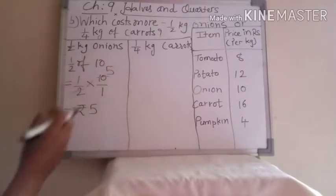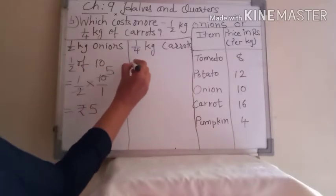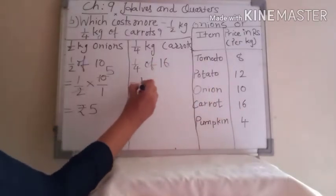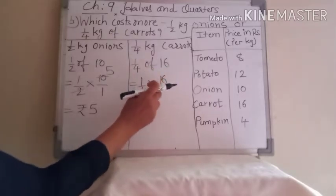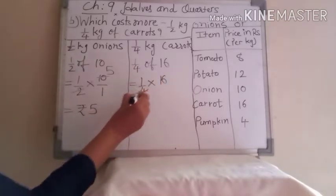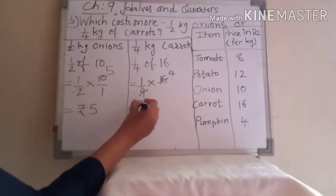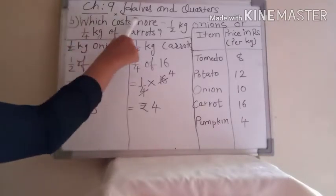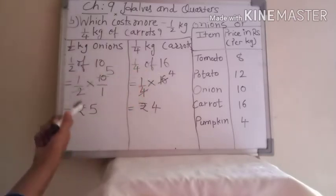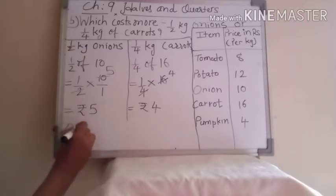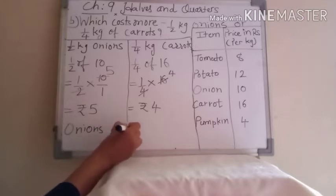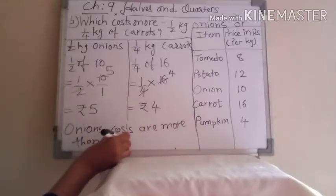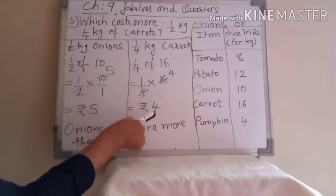Now we solve with the method. Write: 1/4 of 16, then equal to 1 upon 4, multiply 16. In the 4 table: 4 fours are 16, so you write 4 here. Price of 1/4 kg carrot is rupees 4. Now which costs more? Onion cost is more than carrots — onion price is 5 and carrot price is 4, so onion cost is higher.